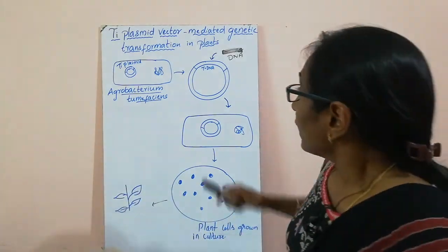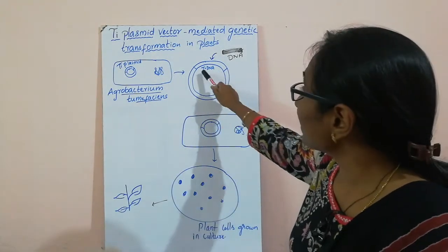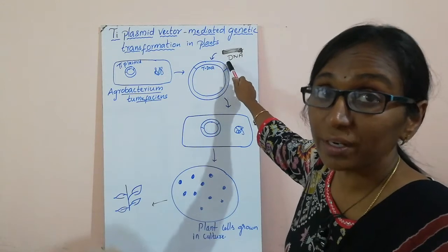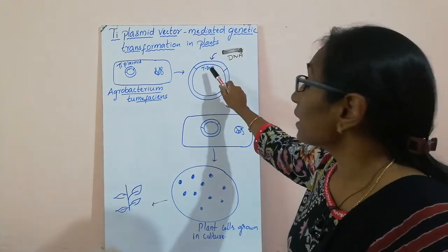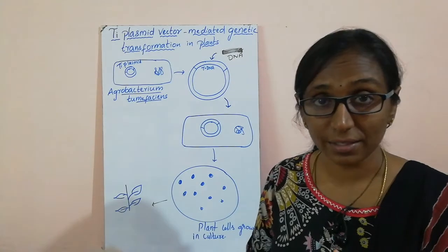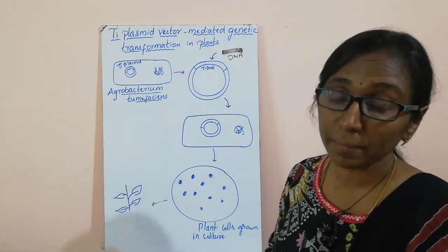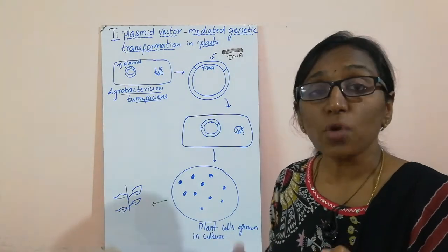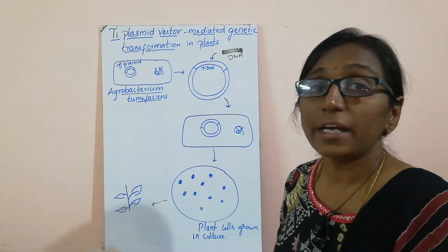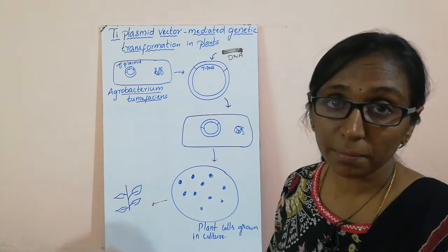The Ti plasmid structure contains a T-DNA, which is called transferred DNA, and this is able to induce tumours in plant cells. Agrobacterium tumefaciens, which contains this vector, is used for causing crown gall disease in plants.